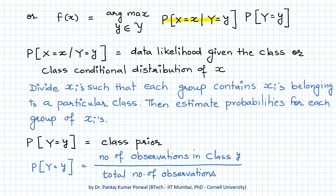The term P(X=x | Y=y) is called the data likelihood given the class — that is, the probability that X will have a particular value given we know which class it comes from, also called the class conditional distribution of X. We can estimate it by grouping all the x's belonging to a particular class and estimating probabilities for each group. The term P(Y=y) is called the class prior — our prior estimate of an element belonging to a given class — and it is obtained as the number of observations in class y divided by the total number of observations.